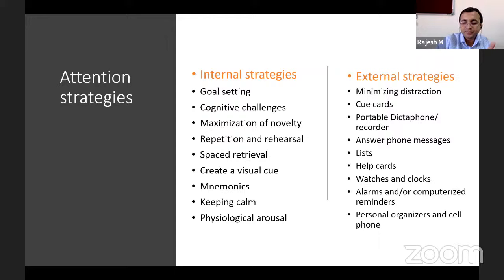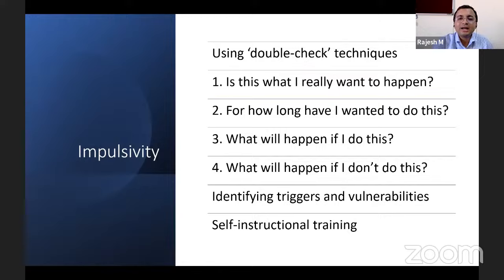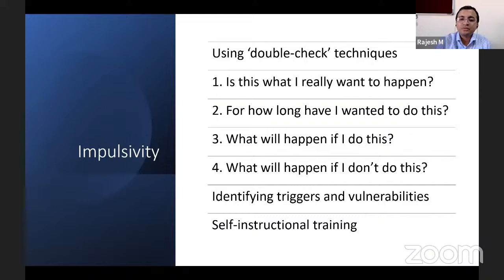For impulsivity control, the child is taught double-check techniques — questioning themselves before acting: 'Is this what I really want to happen? How long have I wanted to do this? What will happen if I do this, or if I don't?' This self-questioning helps the child avoid distractions and pursue appropriate tasks. Identifying personal triggers and vulnerabilities, along with self-instructional training, are also provided.